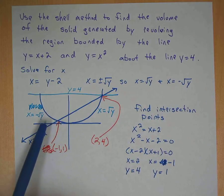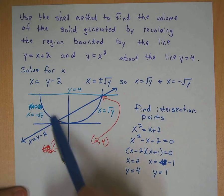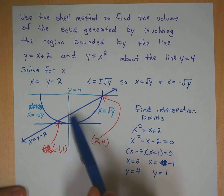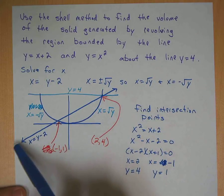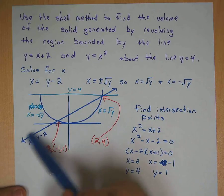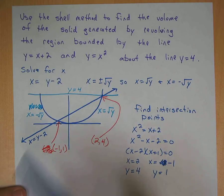I went ahead and graphed these equations, so you get x equals negative square root of y, that's the left side of this parabola, and x equals positive square root of y, that's the right side of this parabola, and here's the line x equals y minus 2 or y equals x plus 2, that's this graph here.